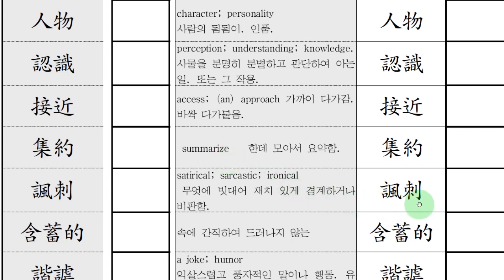그 다음에 풍자. 풍자가 뭘까요? 무엇에 빗대어 재치있게 경계하거나 비판함. 영어 단어는 어떻게 읽지? 새타이어. 풍자는 이게 말씀 언변의 바람 풍 자잖아. 말로 바람에 물듯이 쓱 이렇게. 자 자는 찌를 자 자야. 말로 꾹 찌른다. 이 풍자라는 것은 말로 그 상황을 말풍선처럼 띄워서 하되, 속에는 꼭 해주고 싶은 말이 있는 거지. 시대의 풍자.